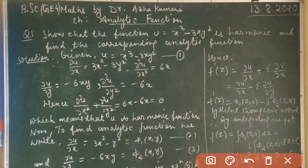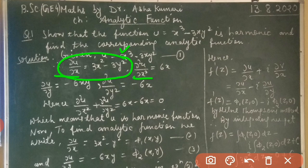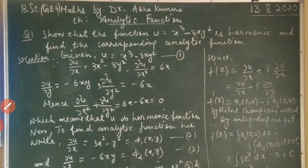Partially differentiating equation (1) with respect to x, we get ∂u/∂x = 3x² - 3y². Differentiating again with respect to x, since 3y² is a function of y only it becomes zero, and we get ∂²u/∂x² = 6x.